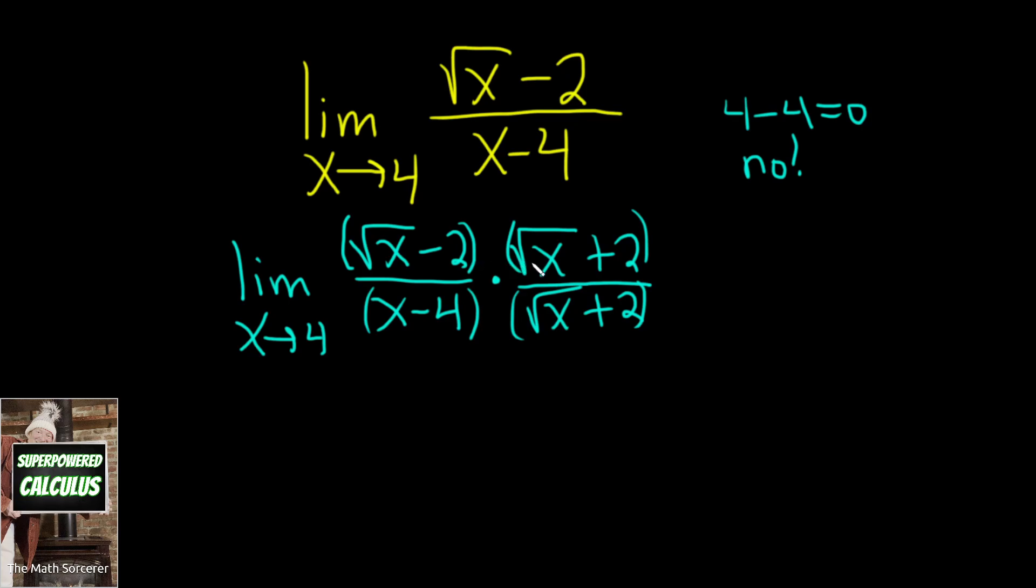And there is a formula we can use here. Recall that if you have a minus b times a plus b, that's equal to a squared minus b squared. This is called the difference of squares formula. So here this is our a, this is our b, this is our a, this is our b. So a is the square root of x, and b is 2.